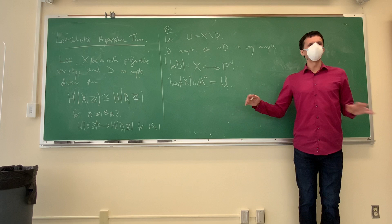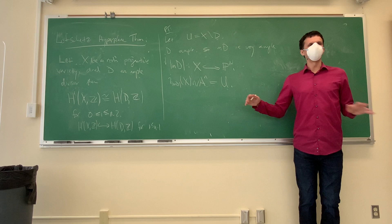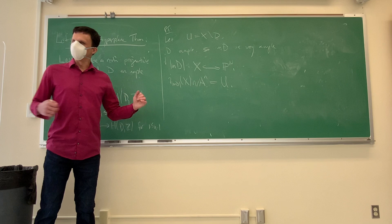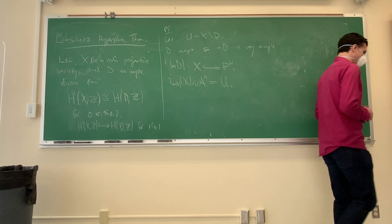One thing to note is that nowhere did I use that X was smooth. So X can be a very singular variety and this still works, because the complement of D in X is smooth, and that's where we're really using the theorem. X could have very pathological singularities and all of this still works.